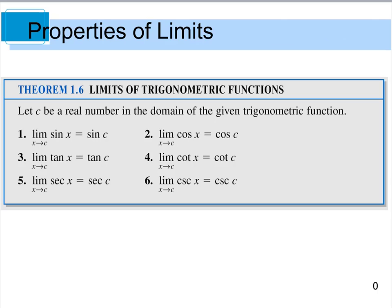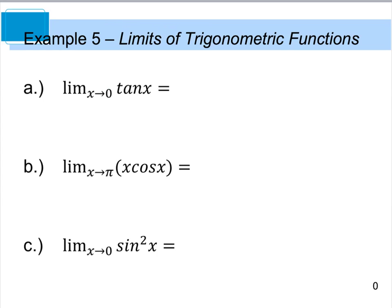Theorem 1.6 deals with limits of trig functions. Essentially a trig function is no different than previous functions — you can use direct substitution. For instance, the limit as X approaches C of sine X equals sine of C. Same with tangent, and so on. In example 5 part A, the limit as X approaches 0 of tan X, using direct substitution, equals tan(0), which equals sine(0) over cosine(0), which is 0 over 1, equal to 0.